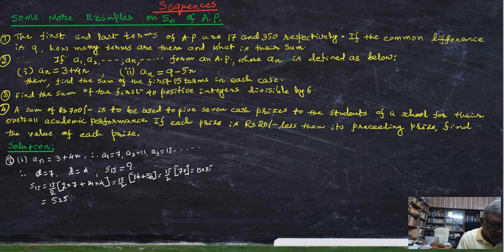And second one, the same way, we can write down a_n equal to 9 minus 5n. And therefore a_1 equal to 9 minus 5, that is 4. a_2 is 9 minus 10, that is minus 1.